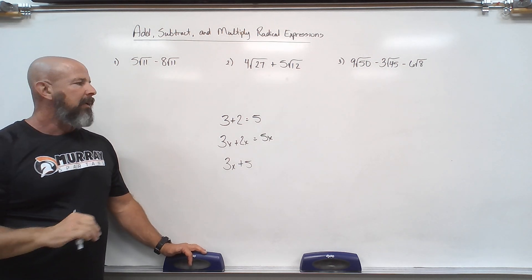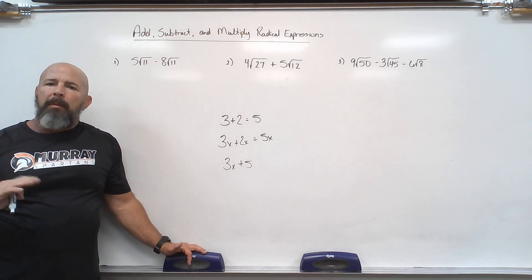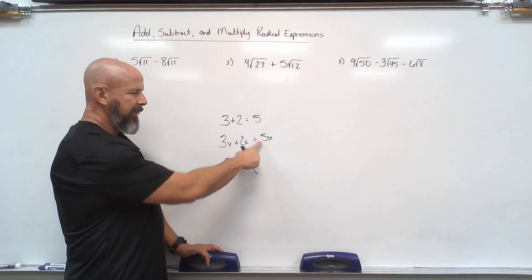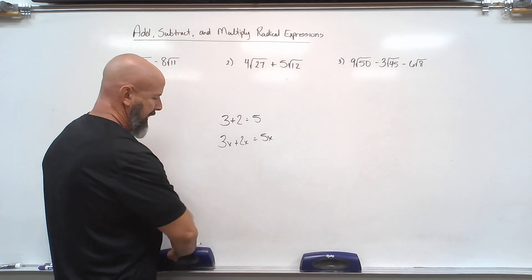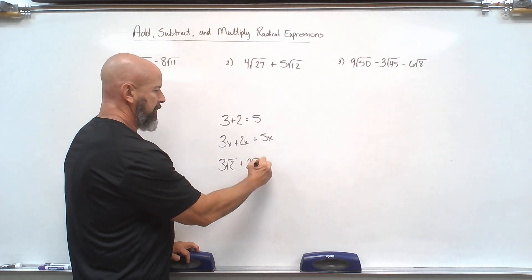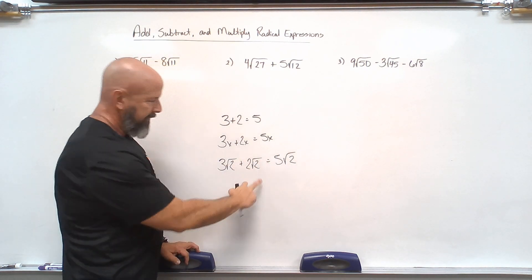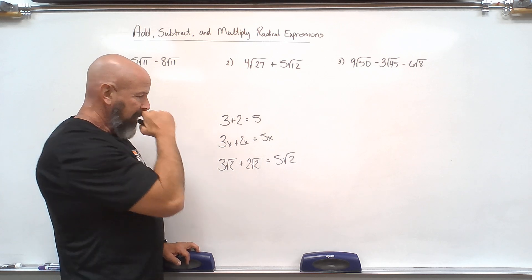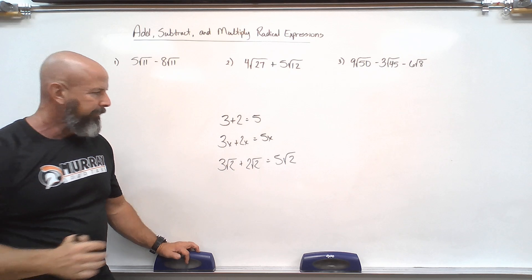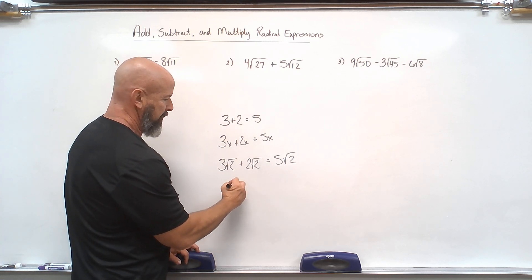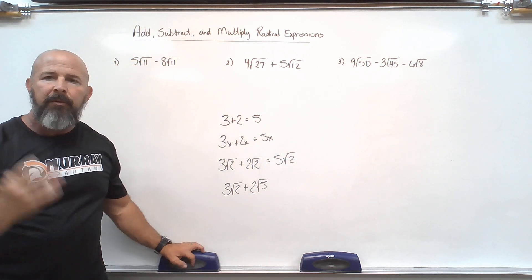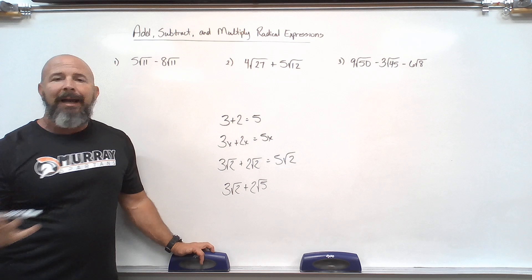When it comes to a radical expression, the radical piece is what makes the terms like. Similar to how 3x plus 2x is 5x, if I had 3 root 2 plus 2 root 2, I would have 5 root 2. That square root of 2 is similar to the x — that's what's making the terms like. So if I had 3 root 2 plus 2 root 5, I couldn't do anything; the two square root pieces are not the same.